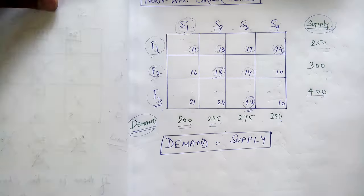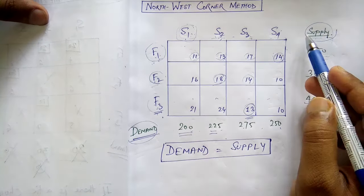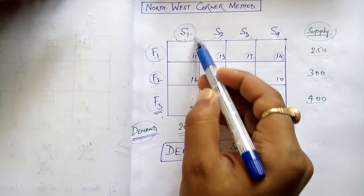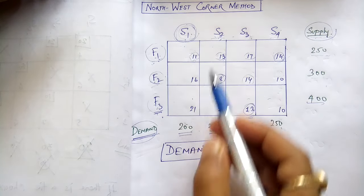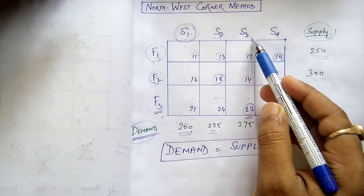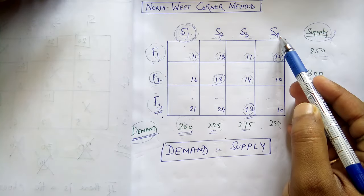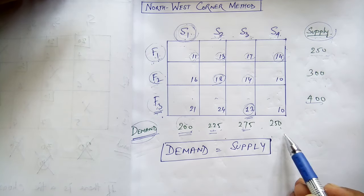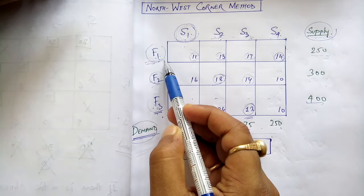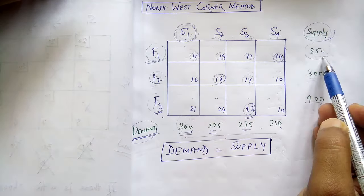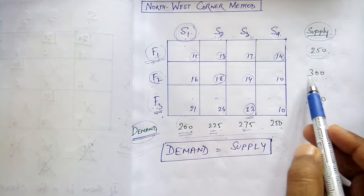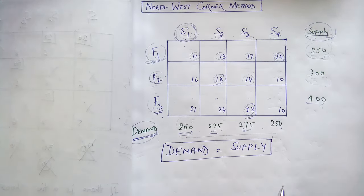Another very important concept is demand and supply. Demand is the requirement of the stores. The demand of store 1 is 200, store 2 is 225, store 3 is 275, and store 4 is 250. These three factories will fulfill these demands. Factory 1 can supply 250 goods, factory 2 can supply 300, and factory 3 can supply 400.